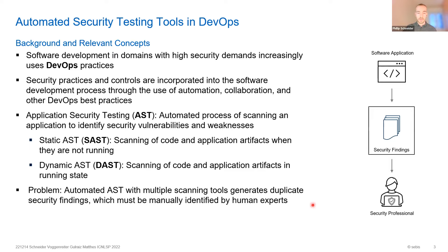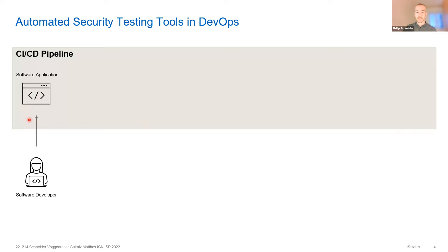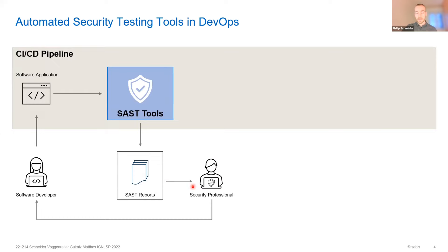To give you a better understanding, I'll quickly walk you through the lifecycle. Given that we have a continuous integration and continuous delivery pipeline and software developers working on a software application, we would use automated scanners to scan the source code first, generating static application security testing reports. These are usually JSON files containing natural language text which can be interpreted by security professionals, who will read this text and try to identify problem areas, then communicate results back to developers.